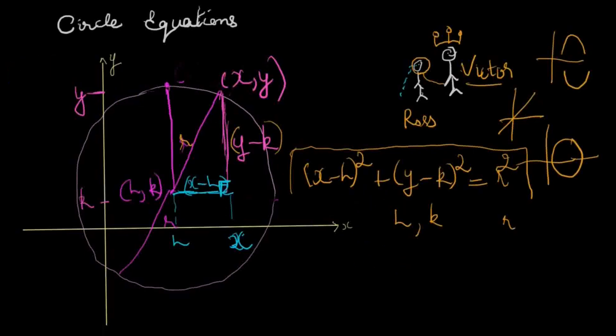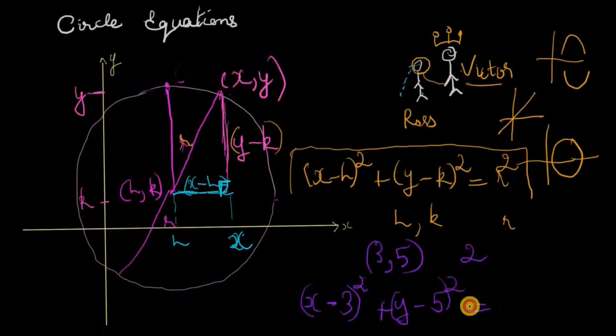For instance, let me give you an example. If there's a circle with a center of (3, 5) and a radius of 2 units, the equation would simply be (x minus 3) squared plus (y minus 5) squared equals 2 squared, which is 4. That's your equation for the circle.